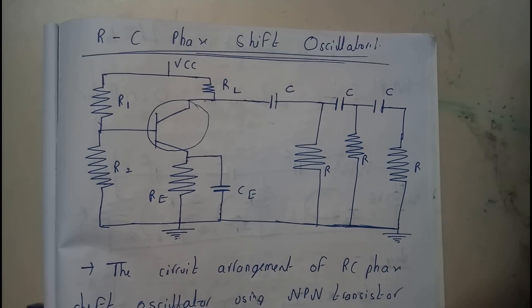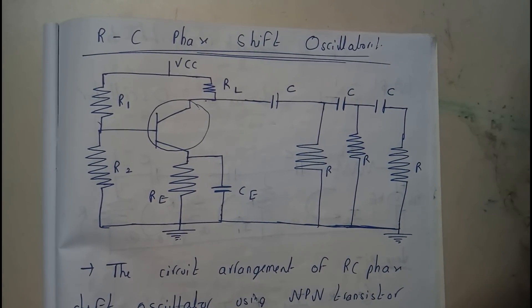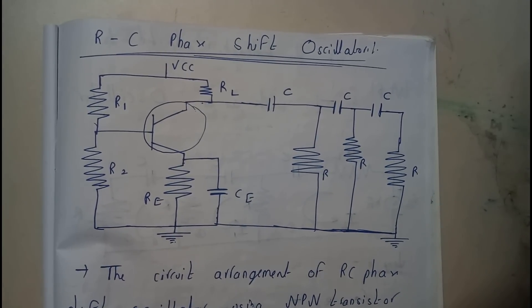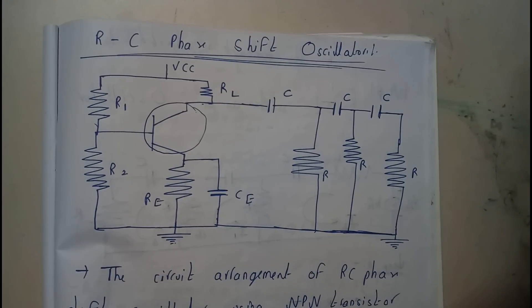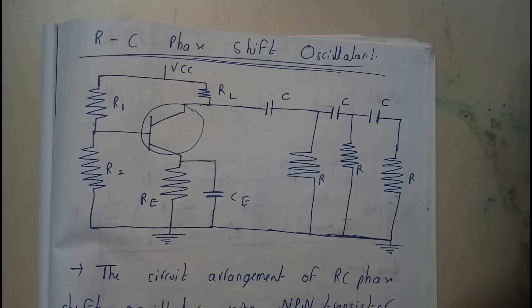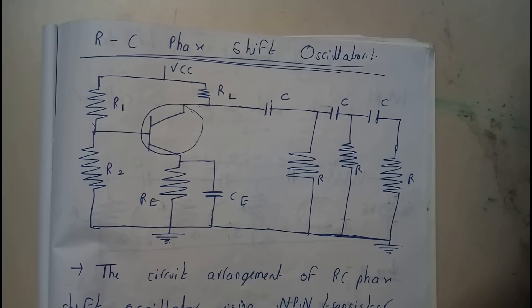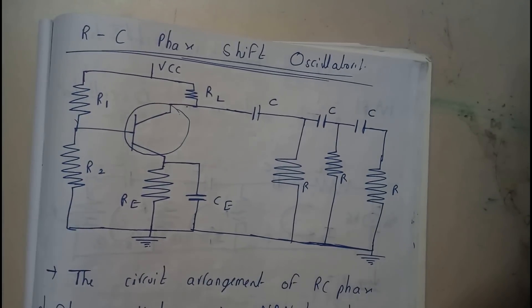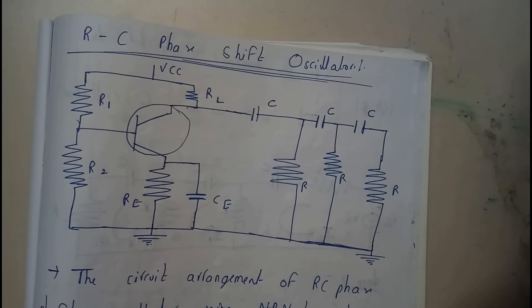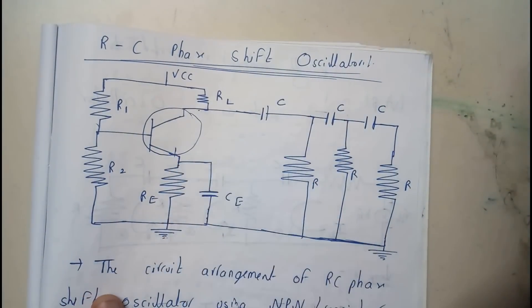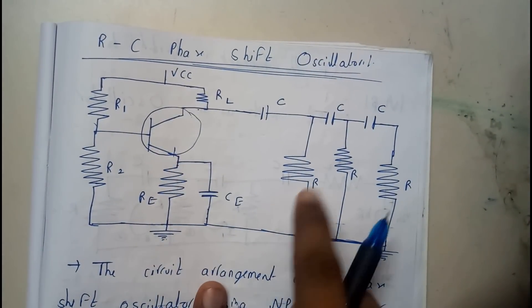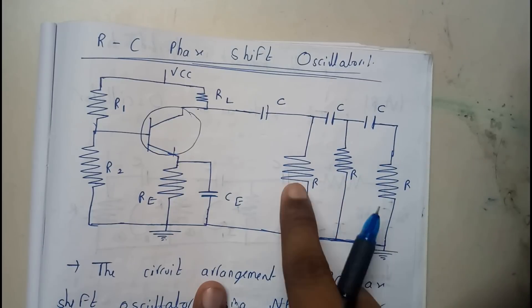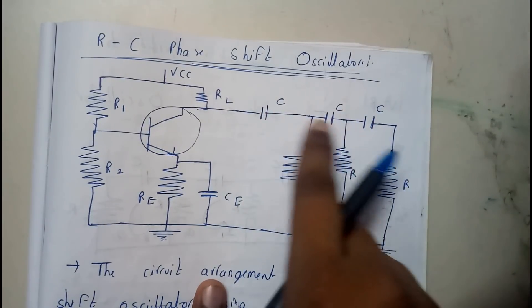Hello guys, we are back with our next tutorial. In this tutorial we will be going through the RC phase shift oscillator. From the name itself we can say it will have resistors and capacitors. In this type of oscillator we are not going to have inductors. The diagram shows a CE amplifier with three resistors in parallel and three capacitors.